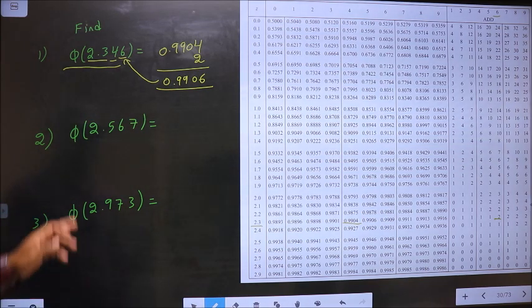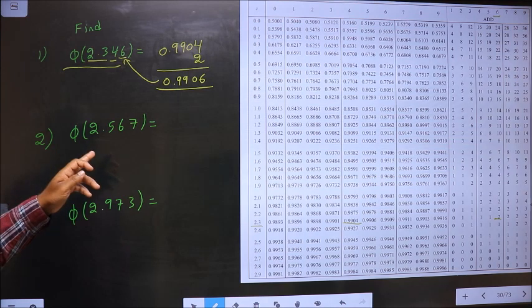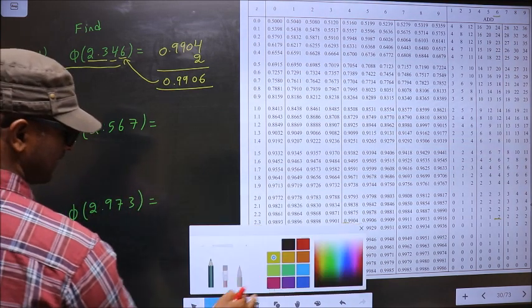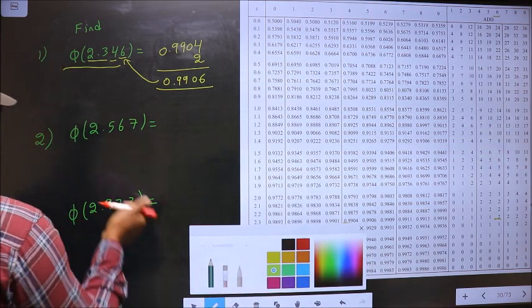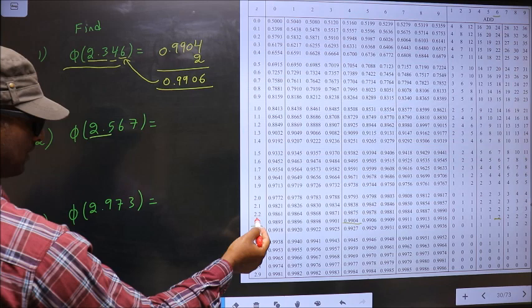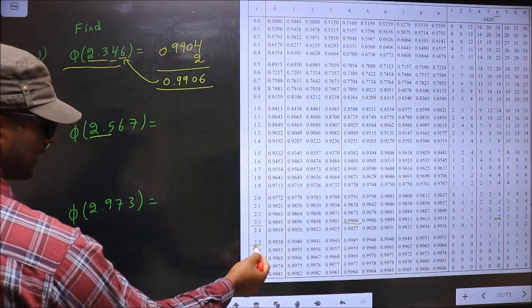Next, Φ of 2.567. We have to find Φ of this. So first you look at 2.5 in this column. So 2.5 we have here.